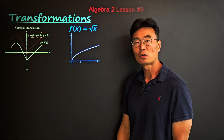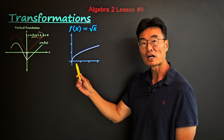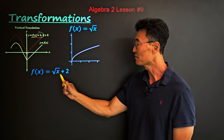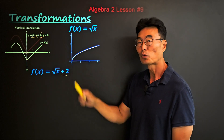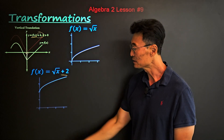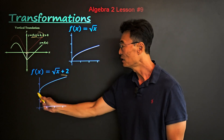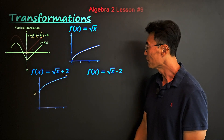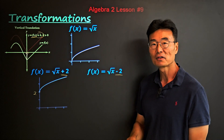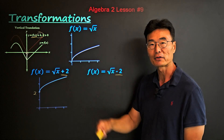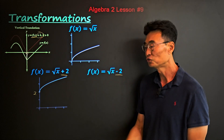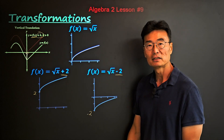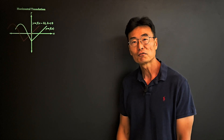If you plot √x it looks like this. If you take √x and add 2, we move this graph up two units where the vertex is now at (0, 2). Likewise, if we subtract 2, we do the opposite — moving the parent graph down two units where the vertex is now at (0, -2).